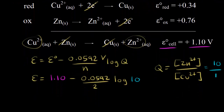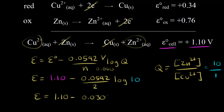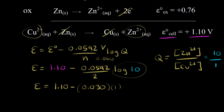Now let's find the cell potential. E is equal to 1.10 minus 0.0592 divided by two, times the log of 10. We can approximate 0.0592 as 0.060; divided by two that's 0.030. Log of 10 is equal to one, so this is 0.030 times one. Therefore, 1.10 minus 0.030 equals 1.07, and the cell potential is equal to 1.07 volts.